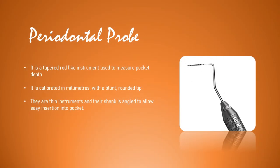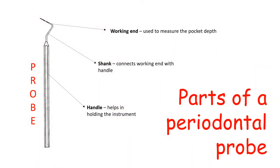Let's talk about the periodontal probe. It is basically a tapered rod-like instrument used to measure pocket depth. It is calibrated in millimeters with a blunt and rounded tip. These are thin instruments whose shank is angled to allow easy insertion into the pocket. The three basic parts are: the working end used to measure pocket depth, the shank connecting the working end with the handle, and the handle for holding the instrument.